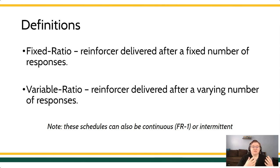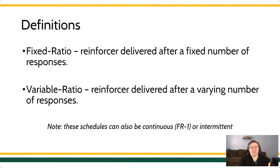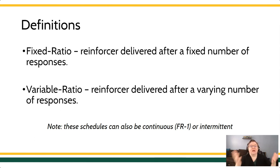A FR7 means you have to emit seven responses to contact the reinforcer. A VR7 means that on average you'll be emitting seven responses, but sometimes it'll be less, sometimes more — on average it's about seven.